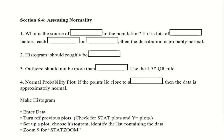To do this, the first thing, if we can, is to figure out what the source of variation in the population is. If there are a lot of different factors, some of which add and some of which subtract, then the distribution is probably normal. If you're imagining a Galton board with balls falling and hitting pegs, as likely to go right as left, with lots of pegs and lots of balls, then you're thinking exactly what I'm thinking — variation comes from many different factors, each adding and subtracting.